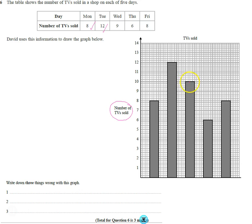Wednesday should go to nine. Ah, so Wednesday here goes to ten. So this is wrong. So the bar for Wednesday should go to nine, not ten. So it currently goes to ten, so it's wrong. So there's one thing wrong.